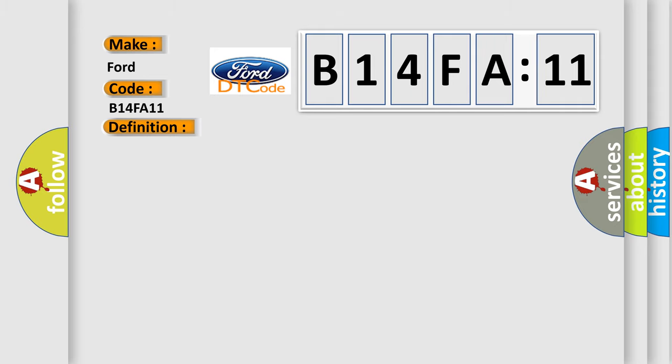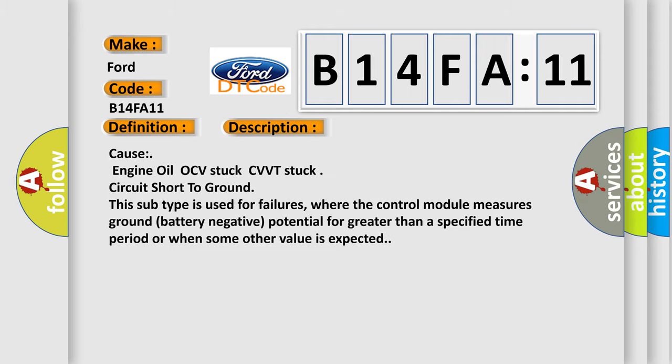And now this is a short description of this DTC code. Cause: Engine Oil OCV Stuck, CVVT Stuck, circuit short to ground. This subtype is used for failures where the control module measures ground battery negative potential for greater than a specified time period or when some other value is expected.